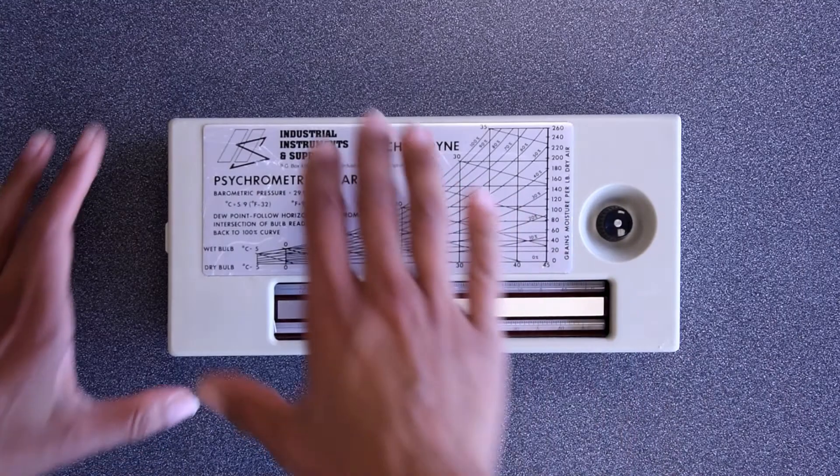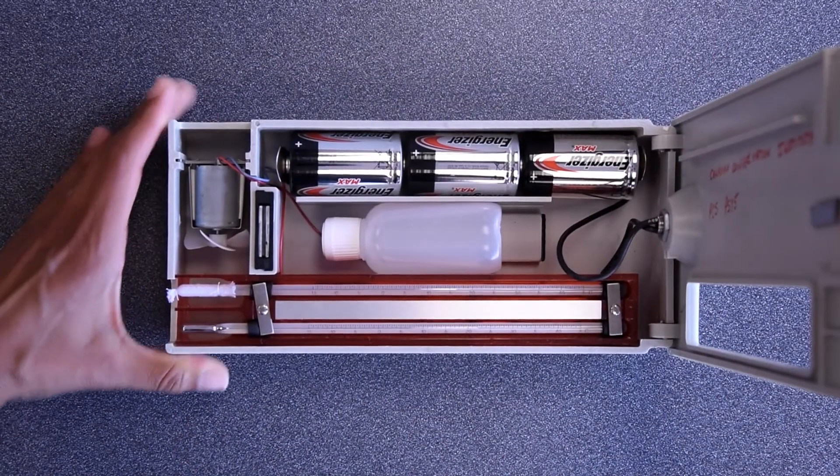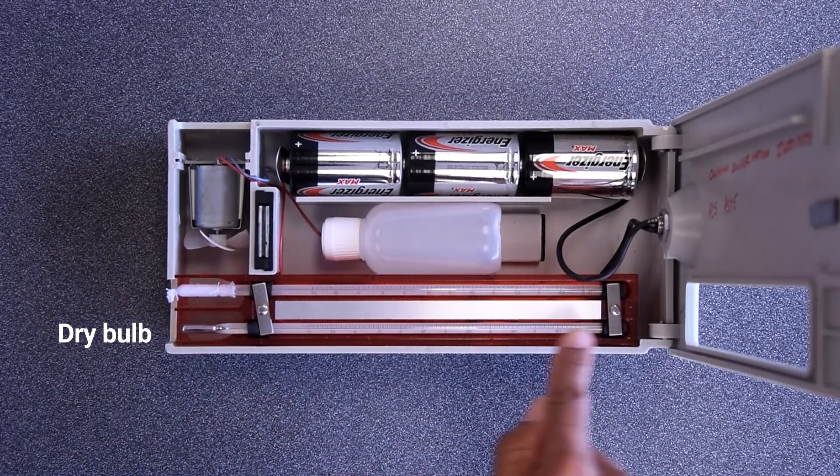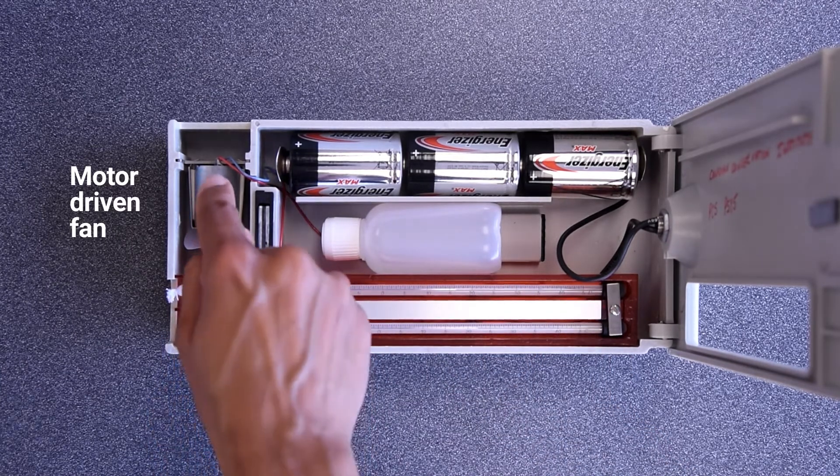This psychrometer is a battery-powered aspirating psychrometer. It has a dry bulb thermometer that is kept dry, a wet bulb thermometer with a sock that is wetted, and a motor-driven fan.